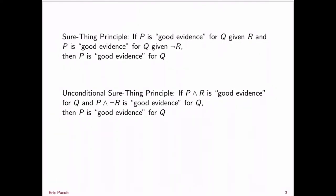Now, what that means is there are going to be two versions of the Sure Thing Principle. One is: if P is good evidence for Q given R, and P is good evidence for Q given not-R, then P is good evidence for Q. So we have some proposition R — we don't know if it's true or not — and we use it to divide up the space. We consider the situation given R is true and ask: is P good evidence for Q? Then we consider not-R and ask the same. If the answer is yes in both cases, then we conclude that P is good evidence for Q.